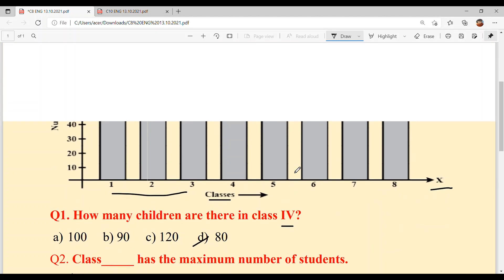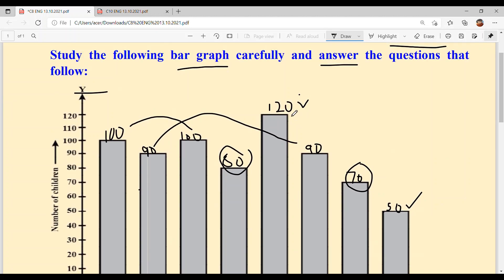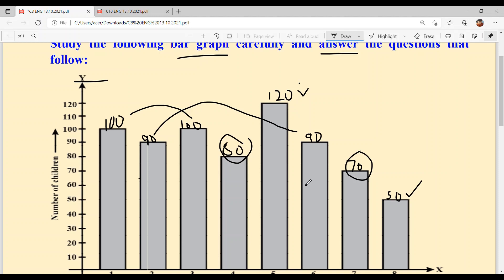And with this, our today's bar graph comprehension is solved. Make sure when bar graph comprehension comes, write the numbers properly. If you're confused about which is which, you can draw lines to help you understand them better so there's no confusion. For example, 50 is far away, not clearly visible. You can just draw a line like this to see it aligns with 50. Okay? Thank you.